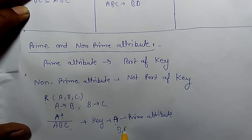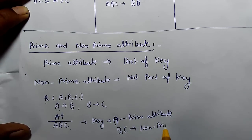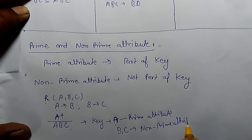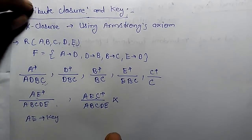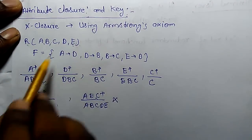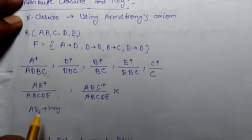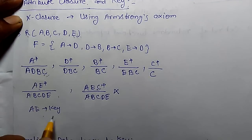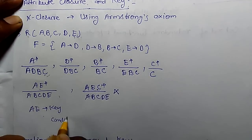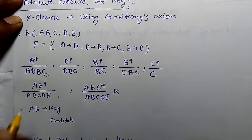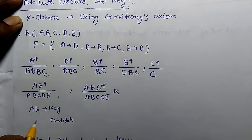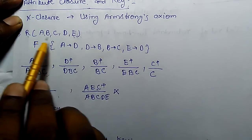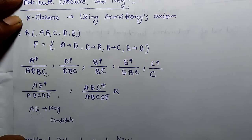B and C are not part of the key, so they are non-prime attributes. Let's take the example from the previous class: relational schema R with attributes A, B, C, D, E and its functional dependencies. In this relational schema we found that A is the candidate key or primary key. So A is the key, and in this functional dependency A and E are prime attributes, while all other attributes except A and E are non-prime attributes.